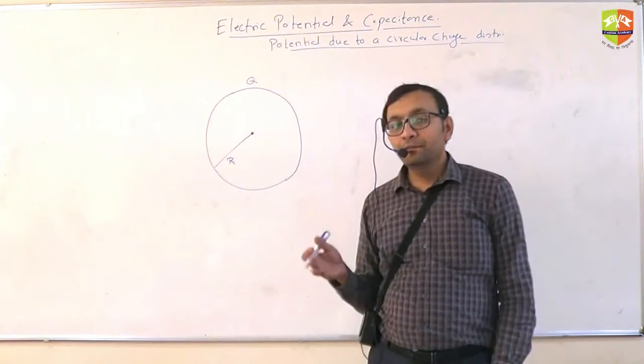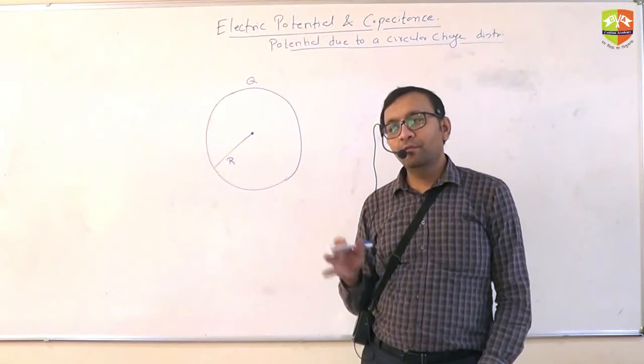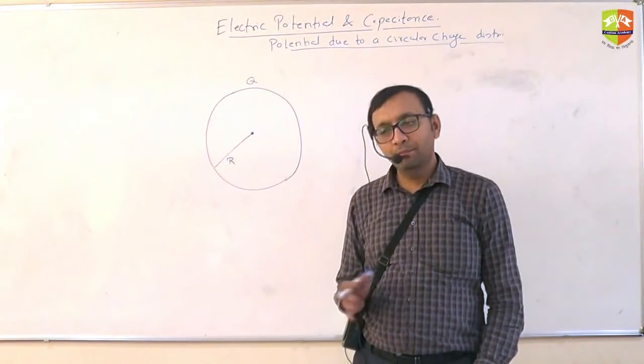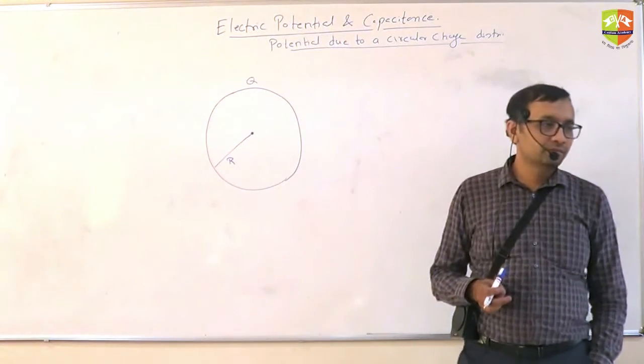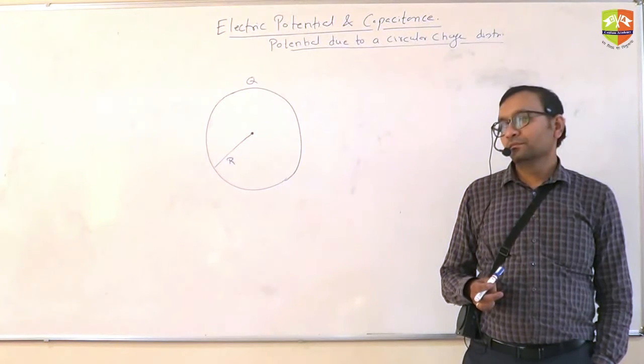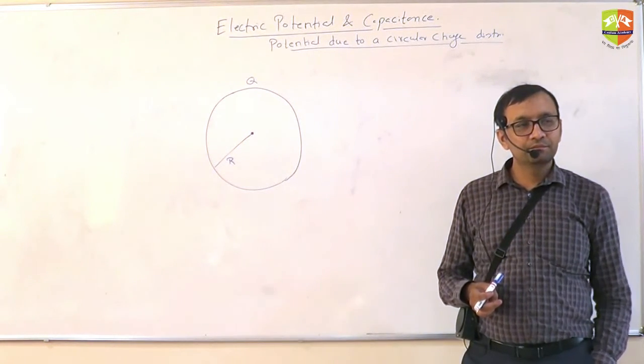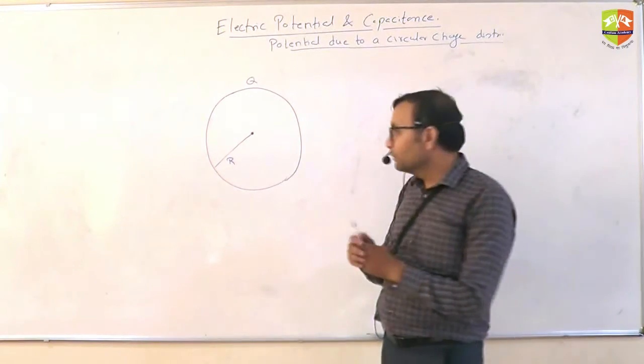The electric field is related to potential like how? E is equal to dV by dr. So E is zero. So the derivative of potential is zero. But potential need not be zero. Should I do it? Perfect. Let me do this one.